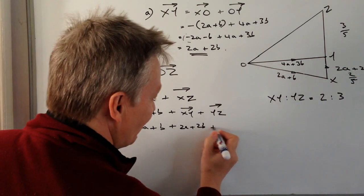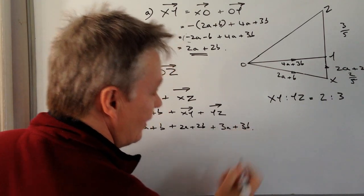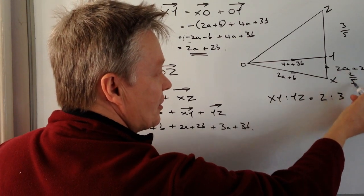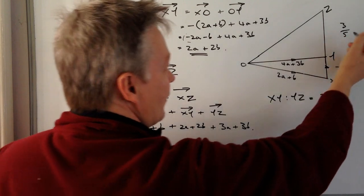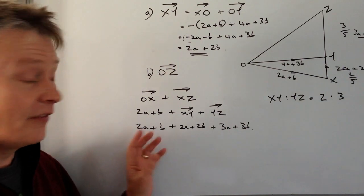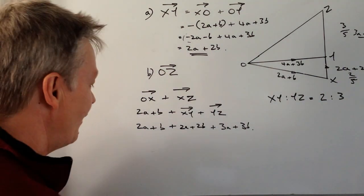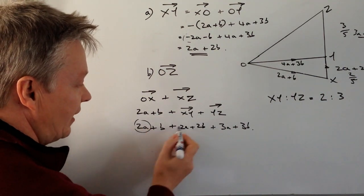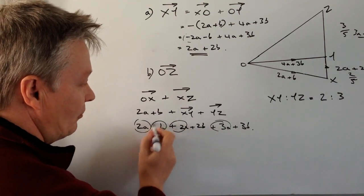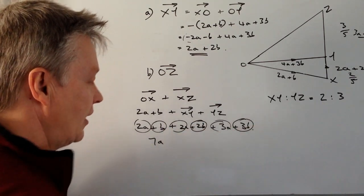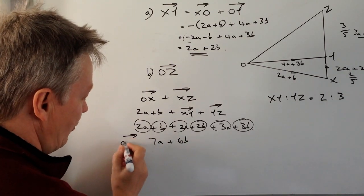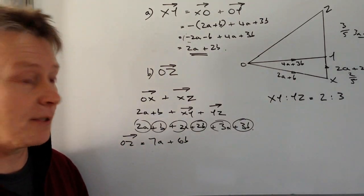So we have OX = 2a + b, XY = 2a + 2b, and YZ = 3a + 3b. Gathering up the like terms: 2a + 2a + 3a gives 7a, and b + 2b + 3b gives 6b. So vector OZ is equal to 7a + 6b.